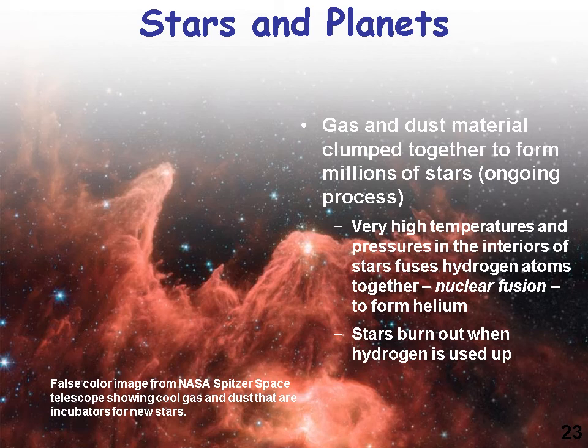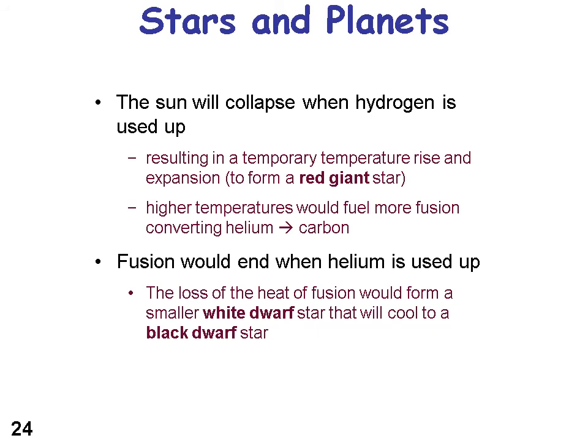Very high temperatures and pressures in the interiors of stars fuse hydrogen atoms together — nuclear fusion — to form helium. Hydrogen has one proton in the nucleus, the simplest element, while helium has two protons. A star will burn out when hydrogen is used up, because nuclear fusion is the main fuel that makes a star give off light. When hydrogen is exhausted, the star collapses, causing a temporary temperature rise and expansion forming a red giant. Higher temperatures fuel more fusion converting helium to carbon in these red giants. When helium is used up, the loss of fusion heat forms a small white dwarf star, which then cools to a black dwarf.